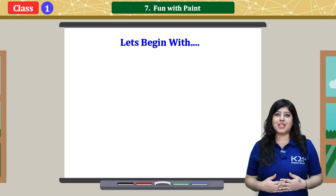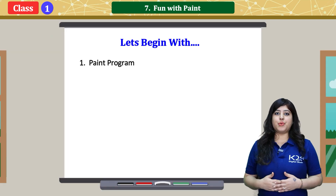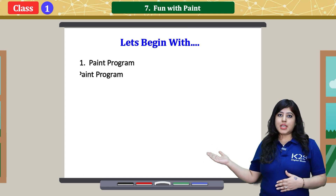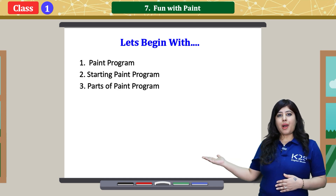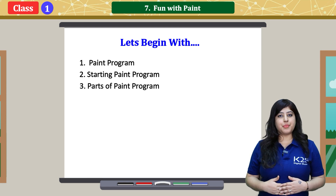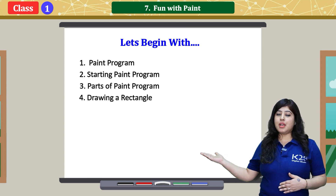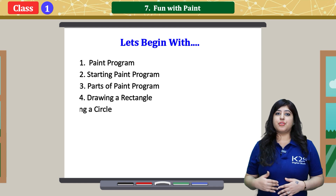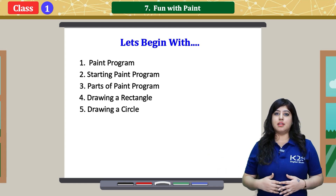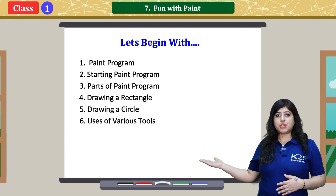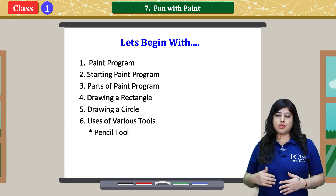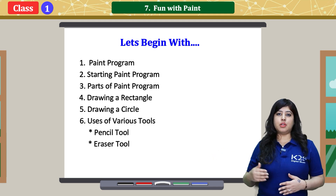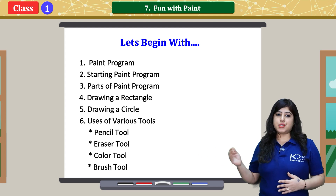So let's begin with the paint program. Starting the paint program. Parts of a paint program. Drawing a rectangle. Drawing a circle. Uses of various tools. Pencil tool. Eraser tool. Color tool. Brush tool.